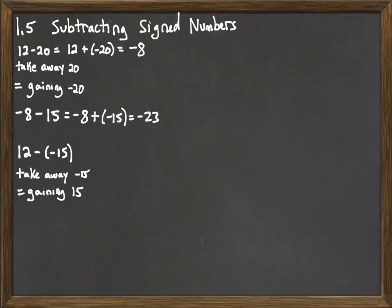So someone taking away a debt of 15 is the same as you gaining that amount of money. So we can change that minus minus into 12 plus 15. And then work out 12 plus 15 to be 27.